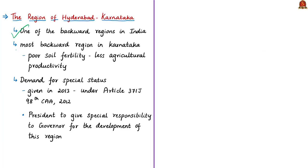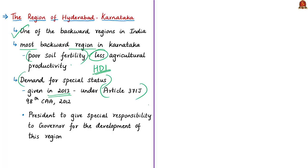Hyderabad Karnataka is considered one of the most backward regions in India. One reason for this is poor soil fertility, leading to lower agricultural productivity. By around 2012, it was reported that the Human Development Indices in this region were below the HDI levels in sub-Saharan Africa. As a result, people demanded special status under the Constitution of India. This demand was pending for a long time and finally in 2013, the region was given special status under Article 371J of the Indian Constitution.